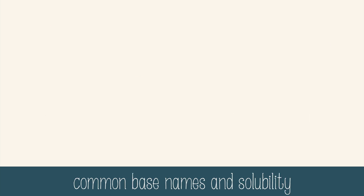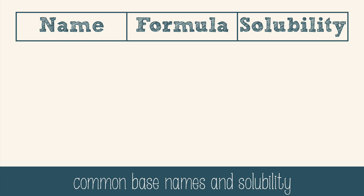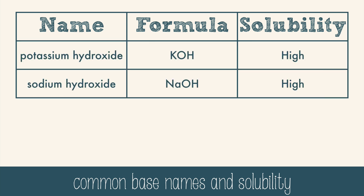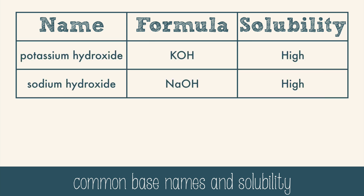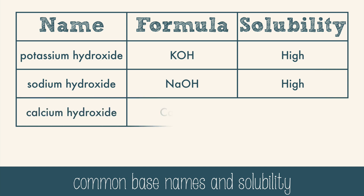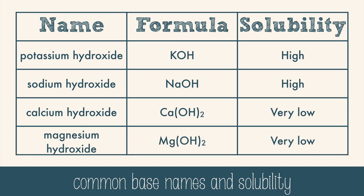Arrhenius bases produce hydroxide, so it's no surprise that all of these bases have hydroxide in their names. Potassium hydroxide and sodium hydroxide are strong bases and are very soluble. Calcium hydroxide and magnesium hydroxide are also strong bases, but they don't dissolve easily in water, which makes the solution very diluted with hydroxide ions compared to the highly concentrated ones in potassium hydroxide and sodium hydroxide.